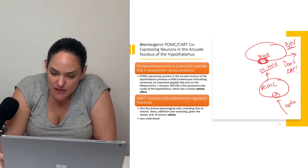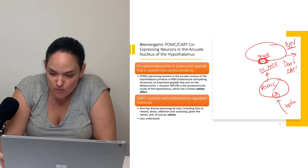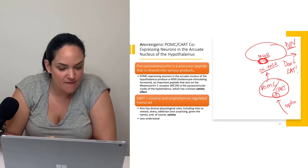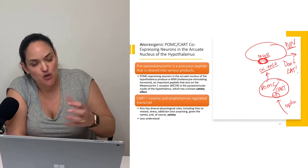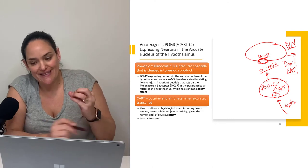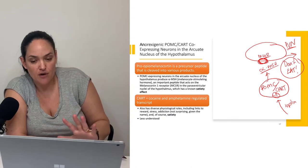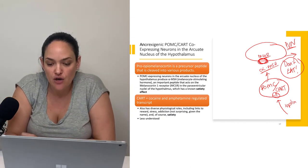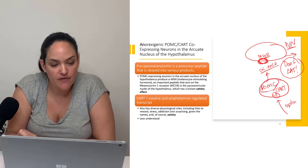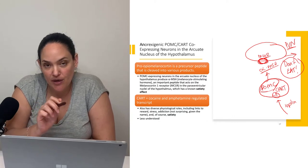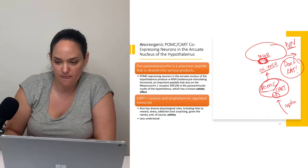These POMC neurons in the arcuate nucleus co-express another product called CART — cocaine and amphetamine regulated transcript. We know this transcript has a role in the satiety pathway, but it's less understood, so we'll focus our discussion primarily on the pro-opiomelanocortin side of these neurons.